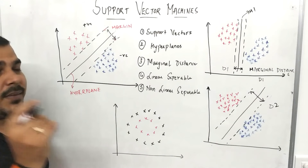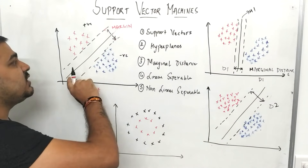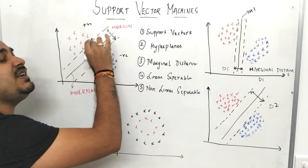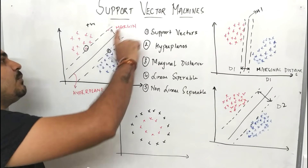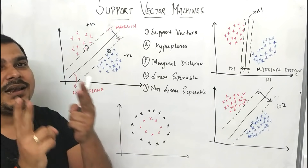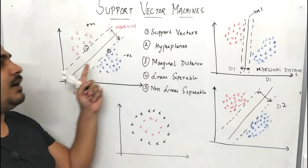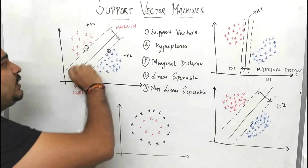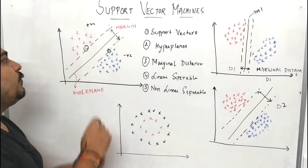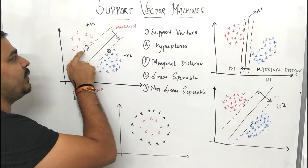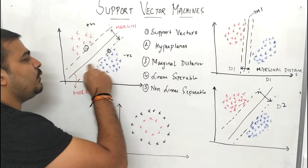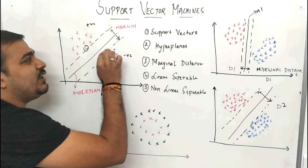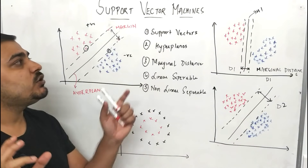Suppose I consider this hyperplane — it makes sure there will be one more plane parallel to it, and this parallel hyperplane will be passing through one of the nearest positive or negative points. So after creating the main hyperplane, we also create two parallel planes shown as dotted lines, both parallel to the main hyperplane. One dotted hyperplane passes through the nearest positive point (shown in red), and the other hyperplane passes through the nearest negative point. That is the intuition behind Support Vector Machine.